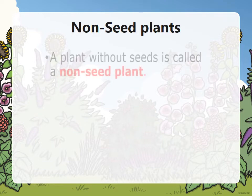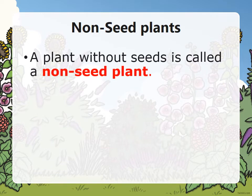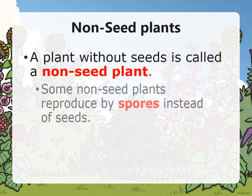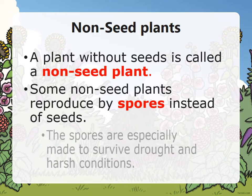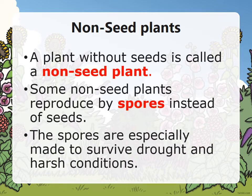Non-seed plants. A plant without seeds is called a non-seed plant. Some non-seed plants reproduce by spores instead of seeds. The spores are especially made to survive drought and harsh conditions.